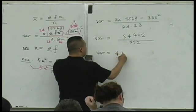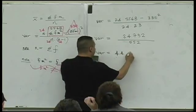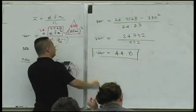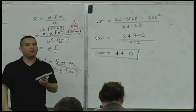So that the variance will be 24,732 divided by 552. If I approximate this answer to the nearest tenth, the variance is 44.8.